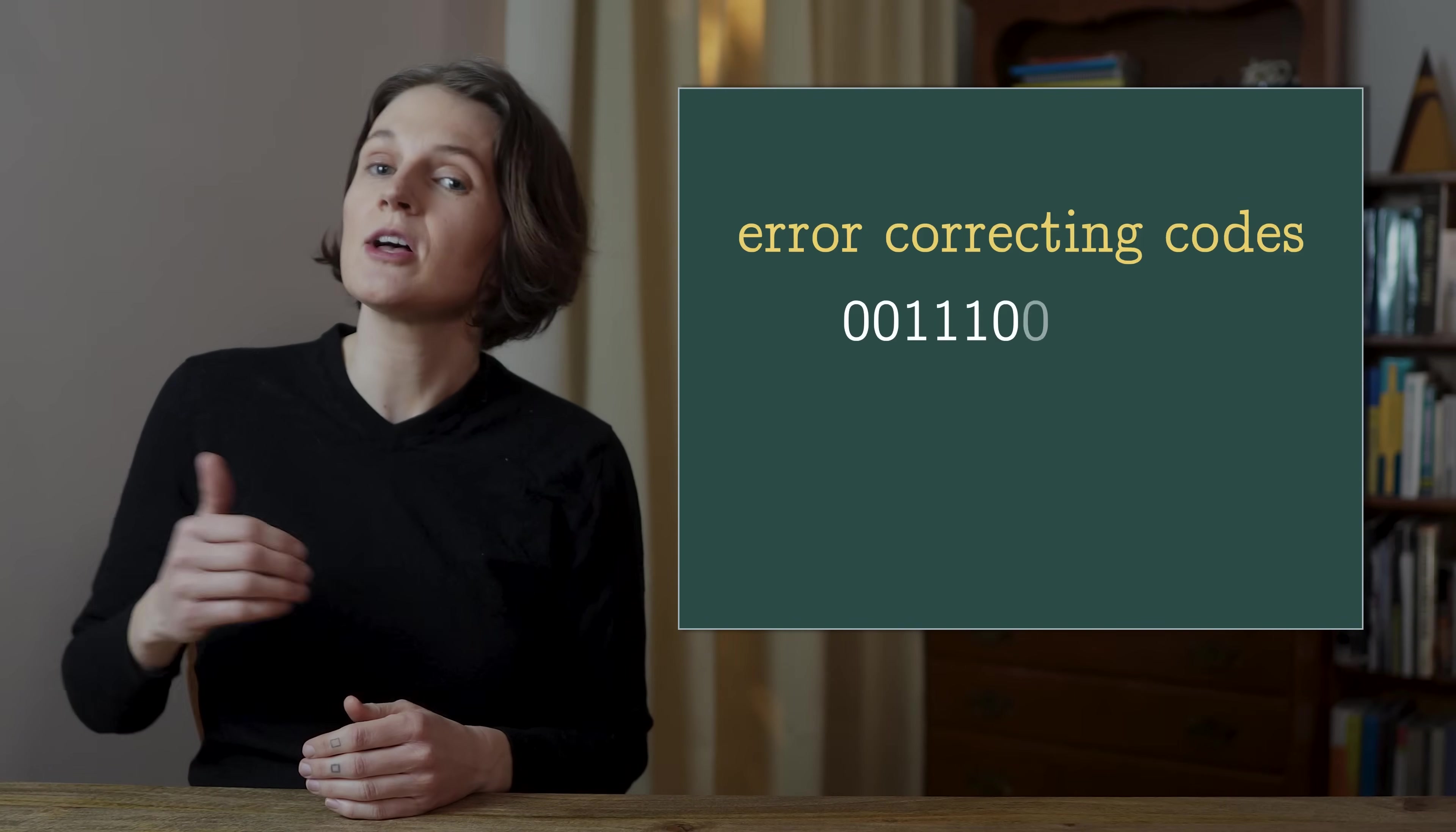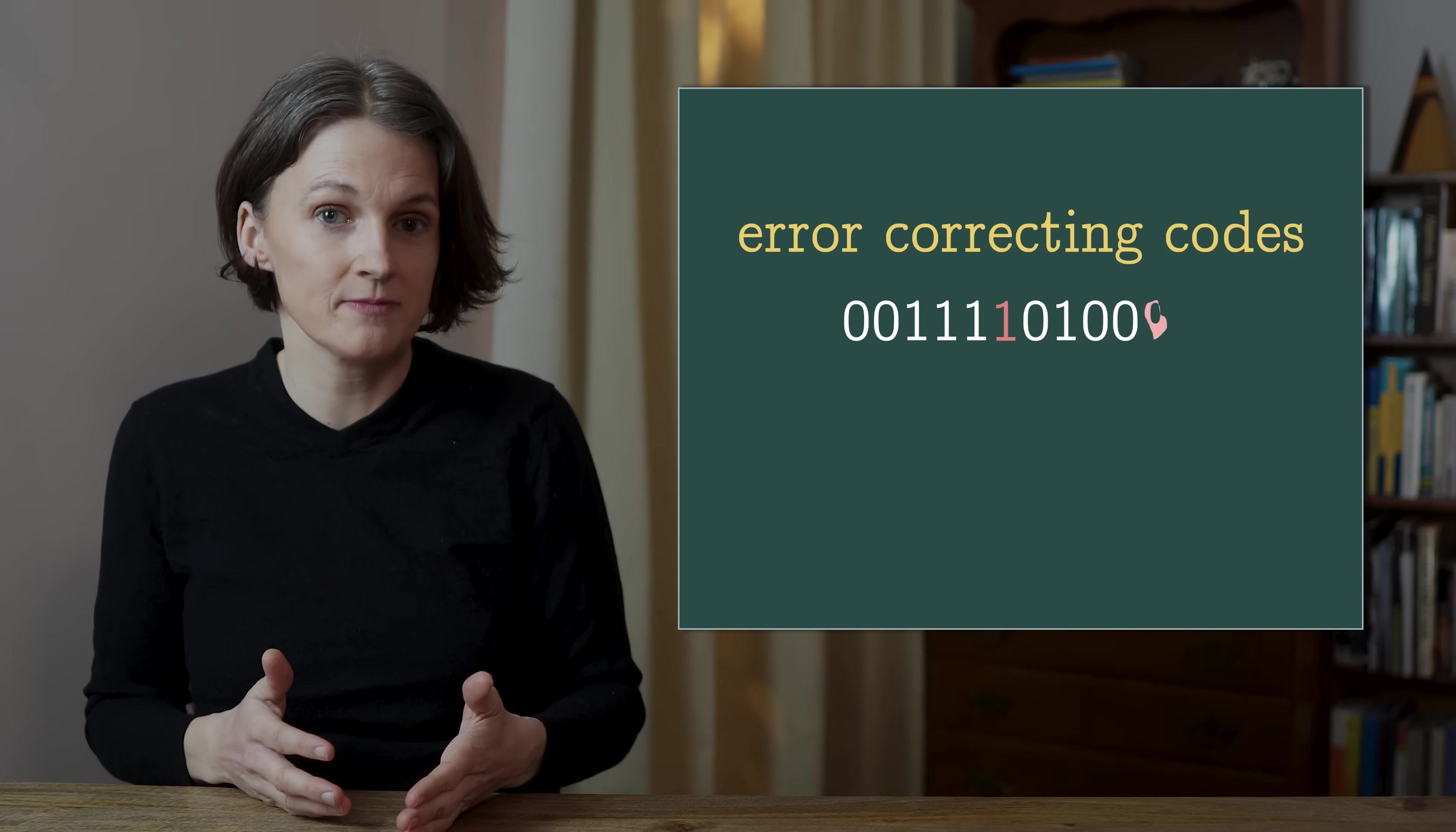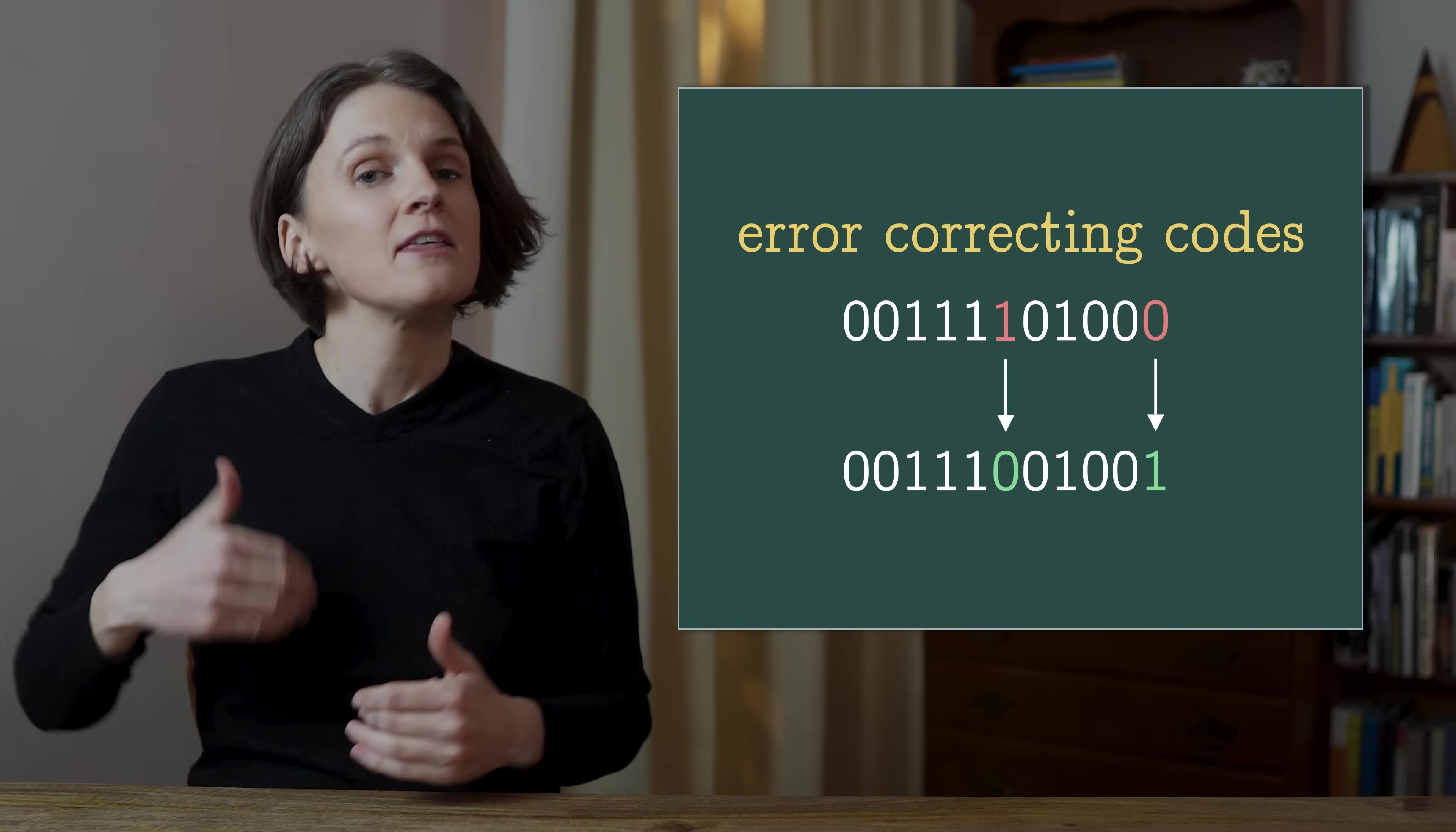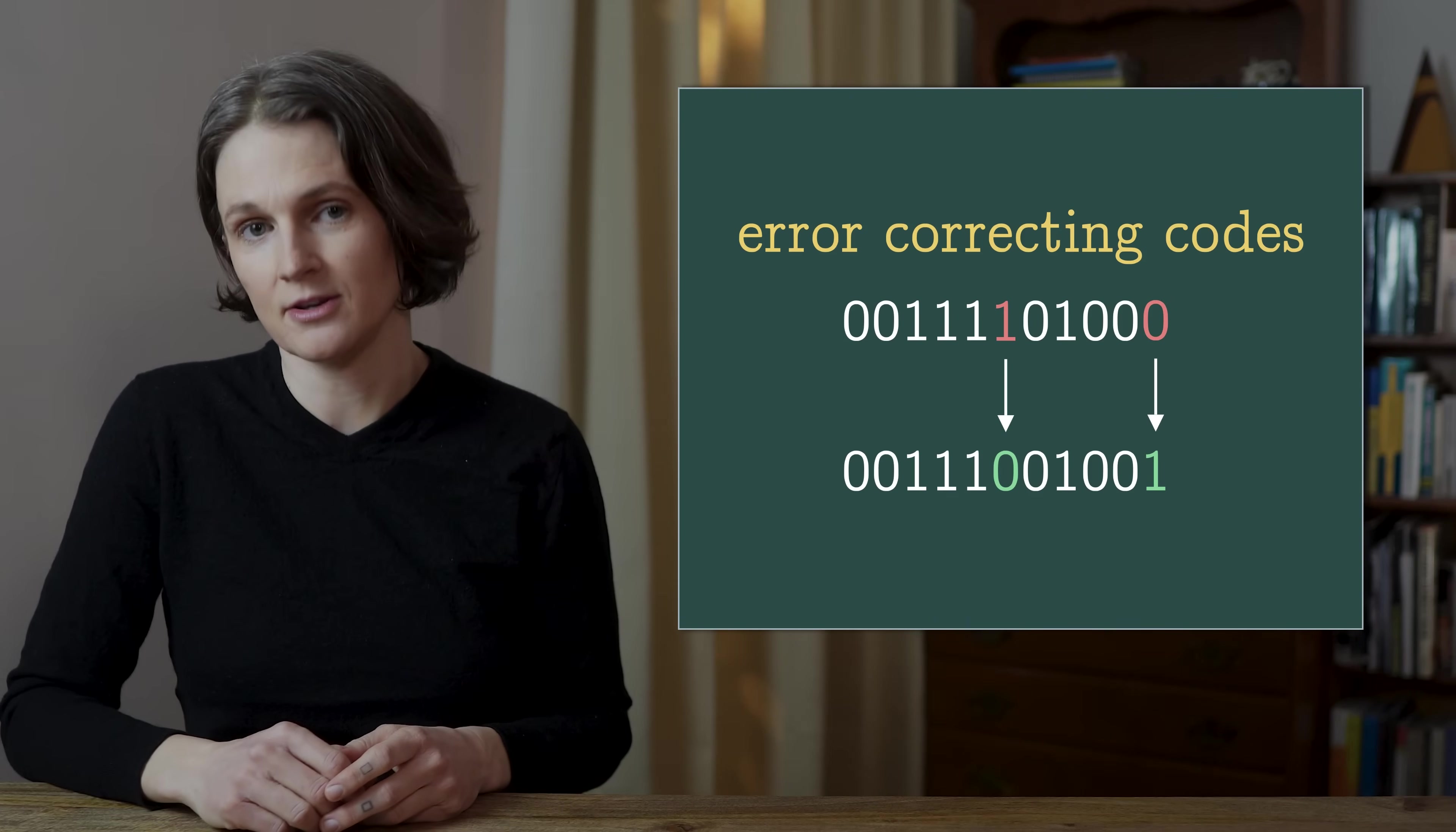For example, error correcting codes, which help sort out errors in the long strings of zeros and ones that computers use to send and store information. Like if a zero accidentally flips to a one or vice versa. In 1948, Claude Shannon showed that good error correcting codes, ones which are maximally efficient, are abundant. They are the hay in a particular haystack. But it took several more decades for researchers to find an explicit practical example of one of these good error correcting codes.